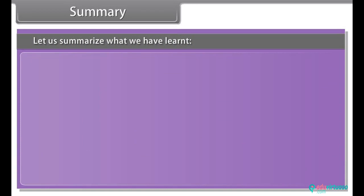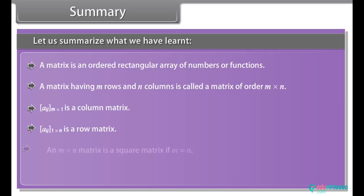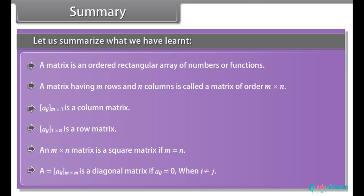Summary: A matrix is an ordered rectangular array of numbers or functions. A matrix having M rows and N columns is called a matrix of order M by N. Aᵢⱼ of order M by 1 is a column matrix; Aᵢⱼ of order 1 by N is a row matrix. An M by N matrix is a square matrix if M equals N. Aᵢⱼ is a diagonal matrix if Aᵢⱼ equals 0 when i is not equal to j.